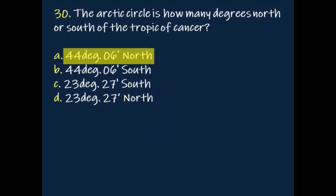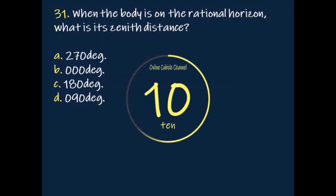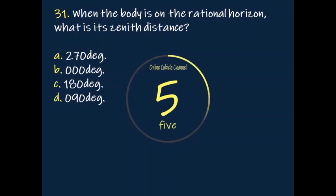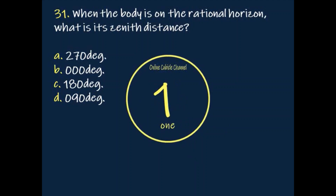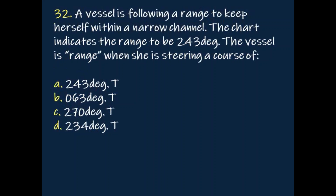Answer: 44 degrees 06 minutes north. Question: When the body is on the rational horizon, what is its zenith distance? Answer: 090 degrees.